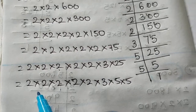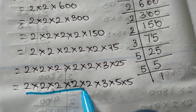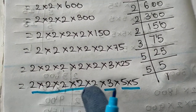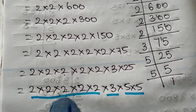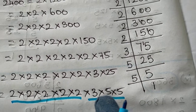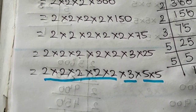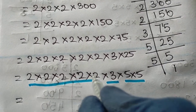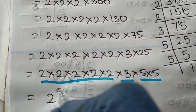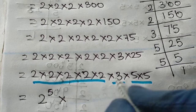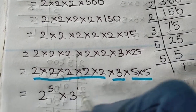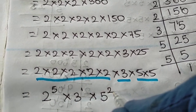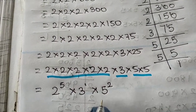Now we separate the similar numbers. How many 2s do we have? Counting: 1, 2, 3, 4, 5 — so 2 is multiplied 5 times. 3 is multiplied once. 5 is multiplied twice. Now let us write this in exponential form: 2 raised to the power of 5, multiplied by 3 raised to the power of 1, multiplied by 5 raised to the power of 2. This is our result.